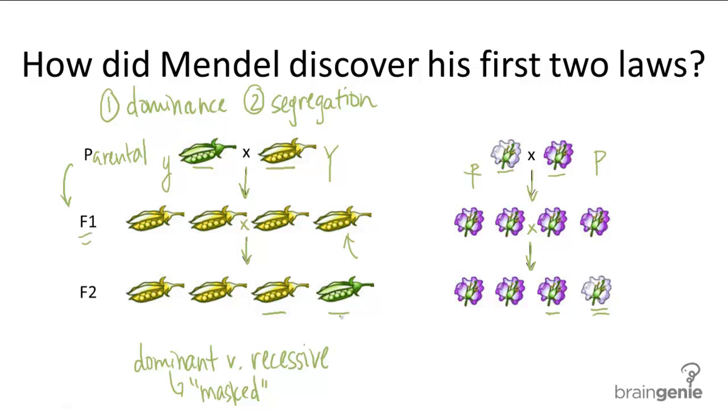In the law of segregation, Mendel observed that phenotype was determined by the inherited traits of both parents. But these traits separated when the F1 generation crossbred to produce F2 generations.